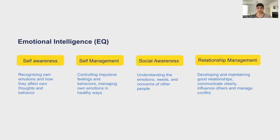There are four pillars of emotional intelligence. Self-awareness is about recognizing your own emotions and how they affect your own thoughts and behavior. Self-management is controlling impulsive feelings and behaviors and managing your emotions in healthy ways. Social awareness is understanding the emotions, needs, and concerns of other people around you. And relationship management is developing and maintaining good relationships, communicating clearly, influencing others, and managing conflict.